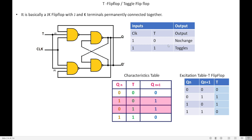Let us see the truth table — it is a very simple flip-flop. If clock is high and T is 0, the output has no change. If T is 1, the output keeps toggling. That is the only characteristic of T flip-flop: when T is 0, there is no change in the output Q; when T is 1, the output toggles.